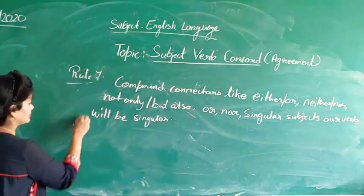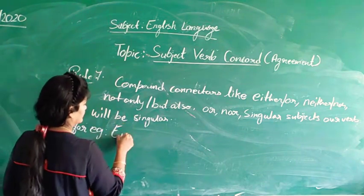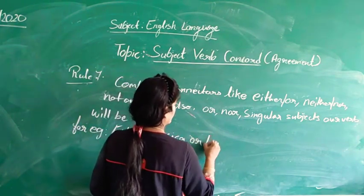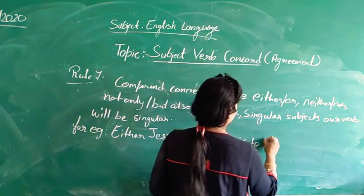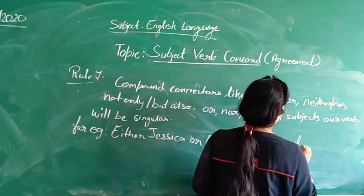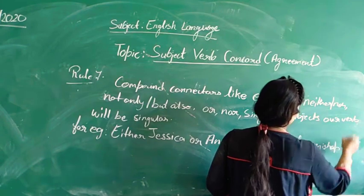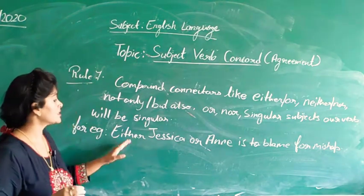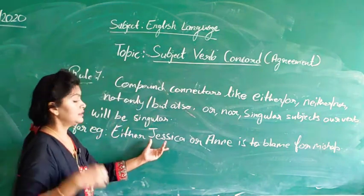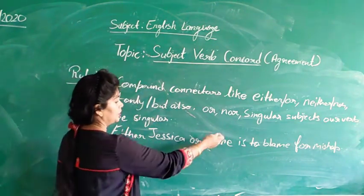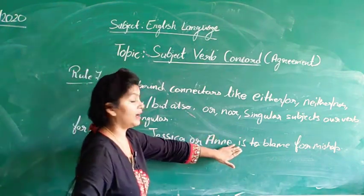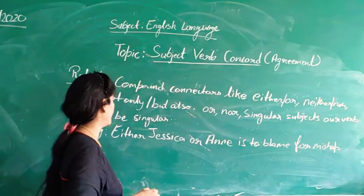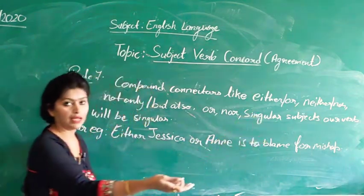Let's see the illustration. For example: 'Either Jessica or Annie is to blame for the mishap.' Some students assume this is a plural subject and write 'are,' which is incorrect. Either/or gives us a choice, so we use the singular form of the verb.